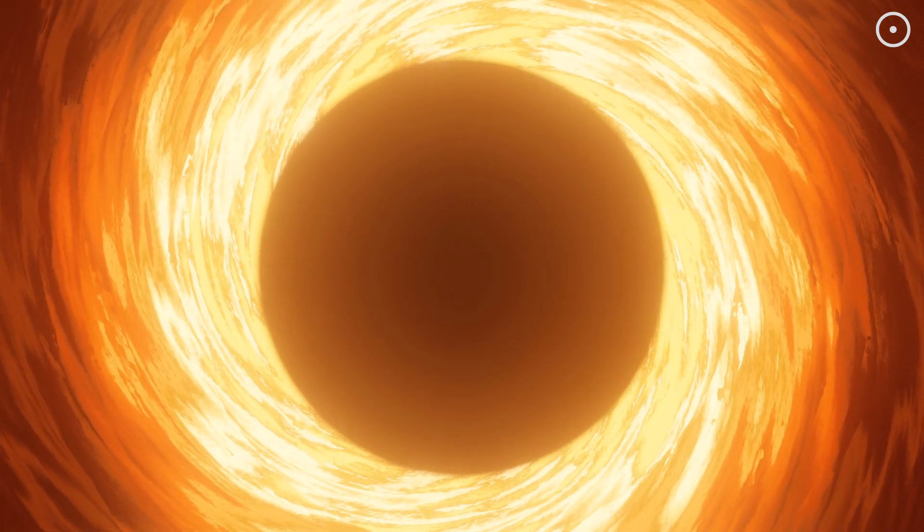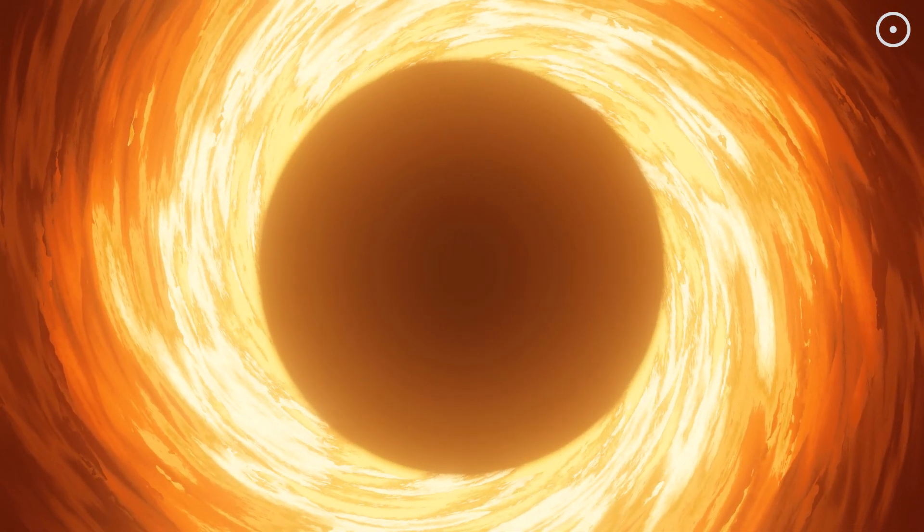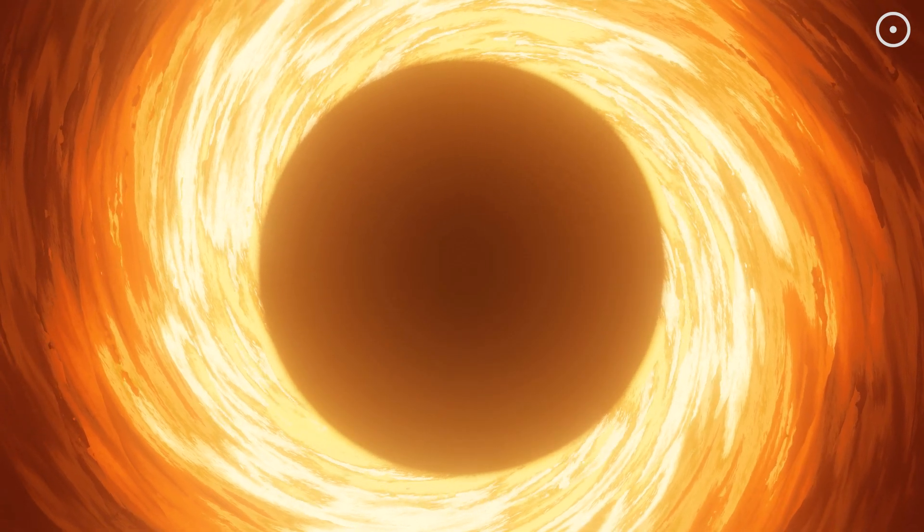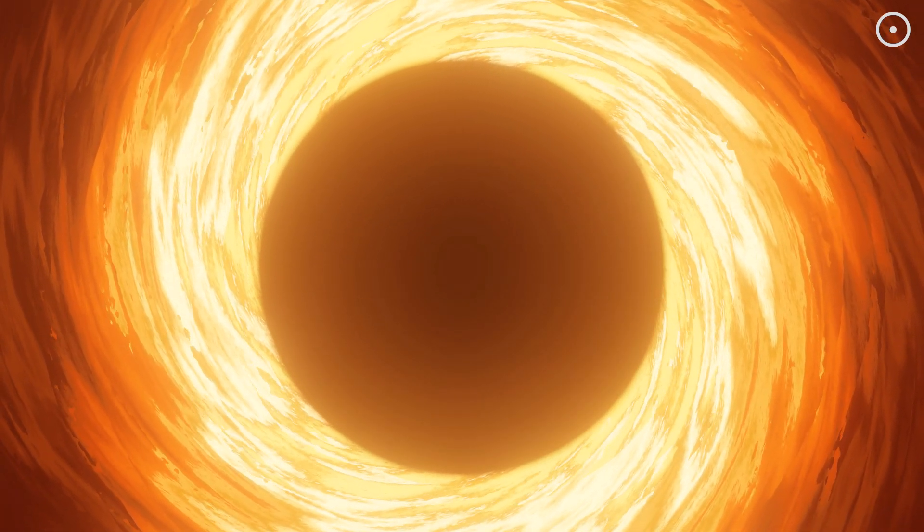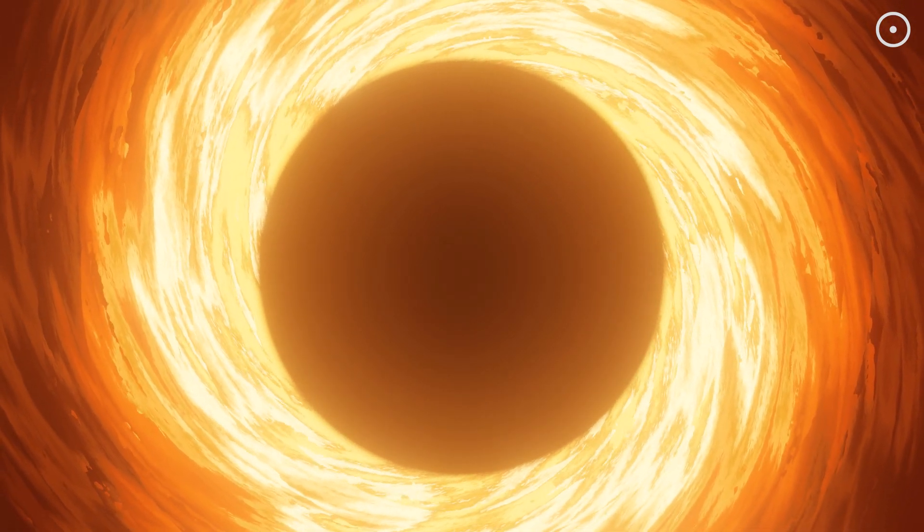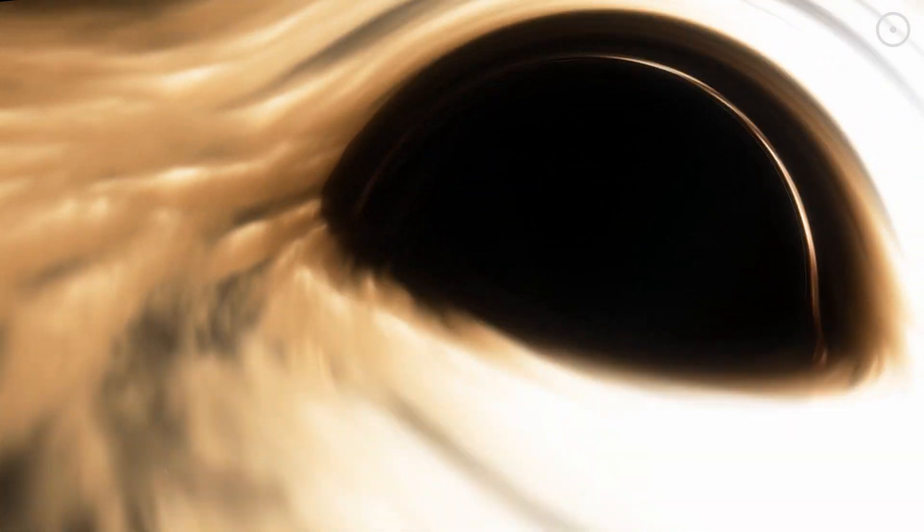All this activity is happening in what scientists call the accretion disk—a massive swirling disk of superheated gas and dust that circles the black hole like water circling a drain. But unlike water going down a drain, this material is moving at nearly the speed of light and being heated to temperatures hotter than the surface of the sun.